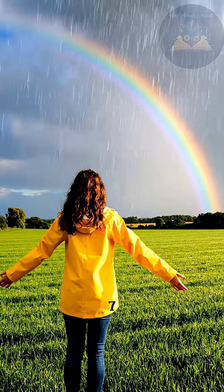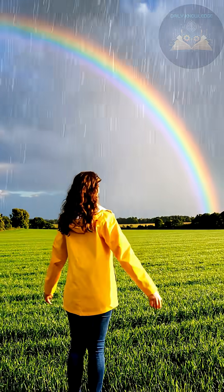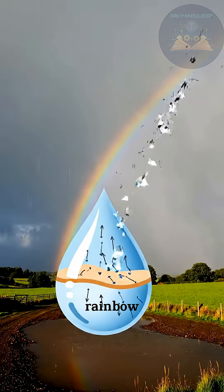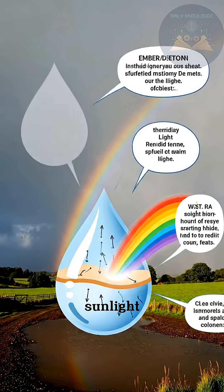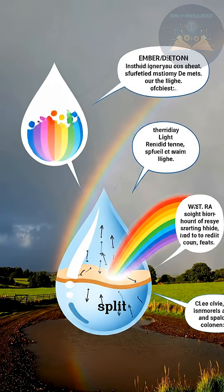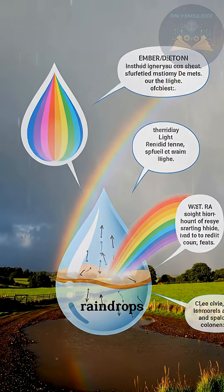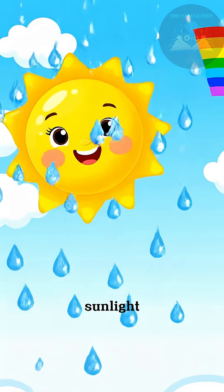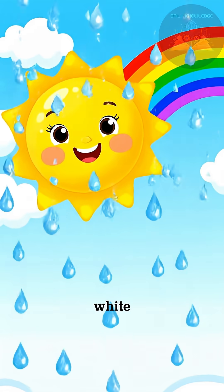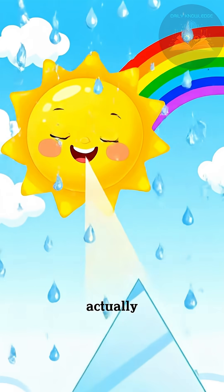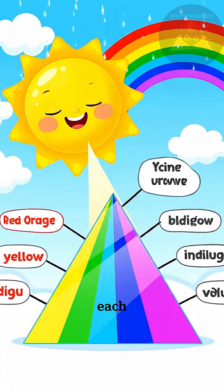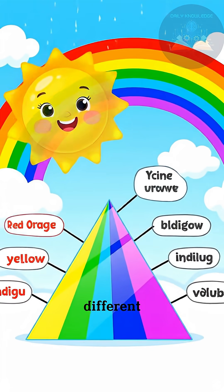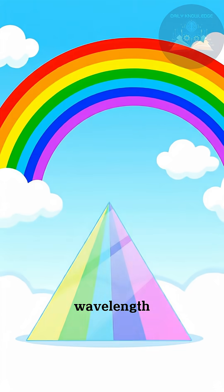Why does a rainbow have seven colors? A rainbow shows seven colors because of how sunlight is split inside raindrops. Sunlight looks white, but it's actually made up of many colors, each with a different wavelength.